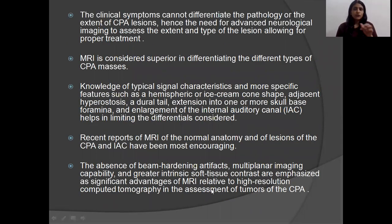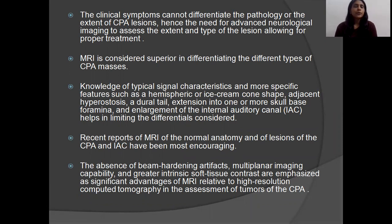The clinical symptoms of all CP angle tumors are mainly headache, vomiting, and vertigo. We cannot differentiate the pathology or extent of CP angle lesions by clinical symptoms alone, so we need neurological imaging modality to assess the extent and type of lesion for proper treatment. MRI is considered superior in differentiating the different types of CPA masses.